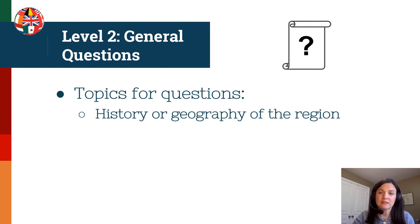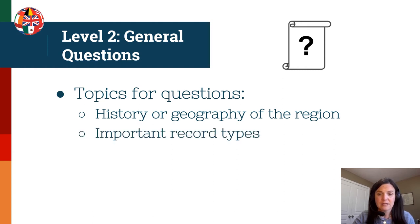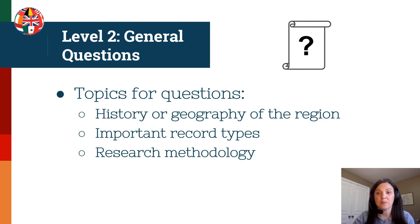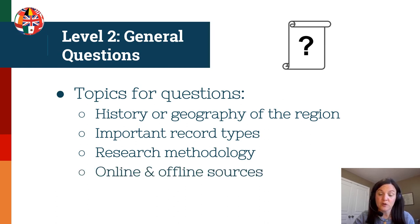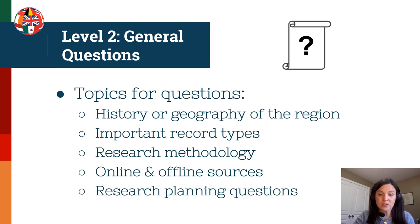The level two general questions cover topics including the history and geography of your region, important record types found there, methodology questions — because good methodology applies across all regions — online and offline sources, and research planning. You'll be asked about your first steps and approach to a research project. This is designed to simulate real-world client scenarios where clients come to you with questions and you need to find documents to clarify the information they already have.